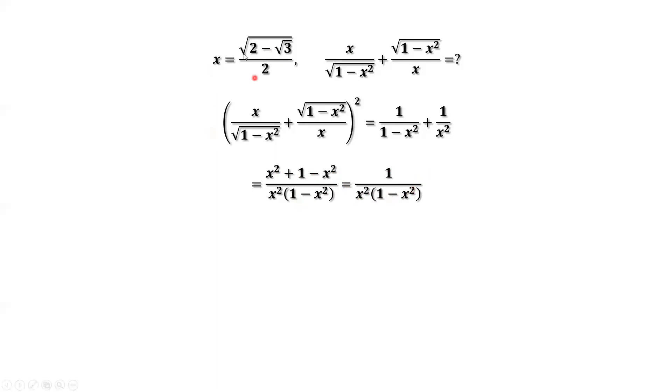Come back to the given condition. x equals square root of 2 minus square root of 3 divided by 2. We take squares on both sides. We have x squared equals 2 minus square root of 3 divided by 4.